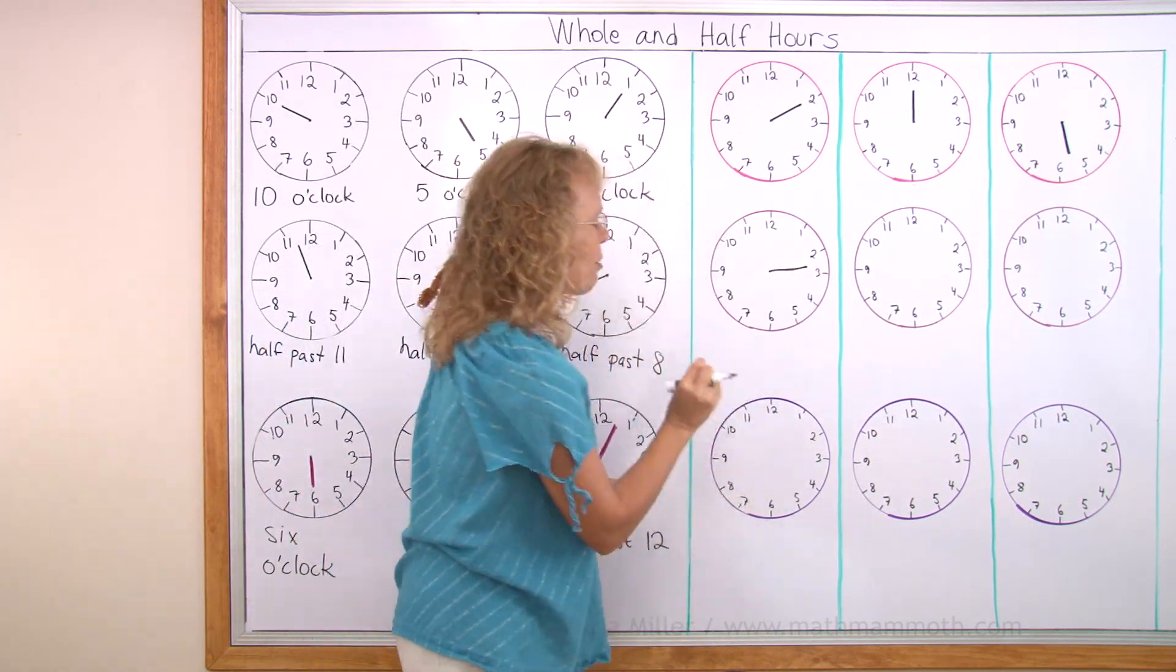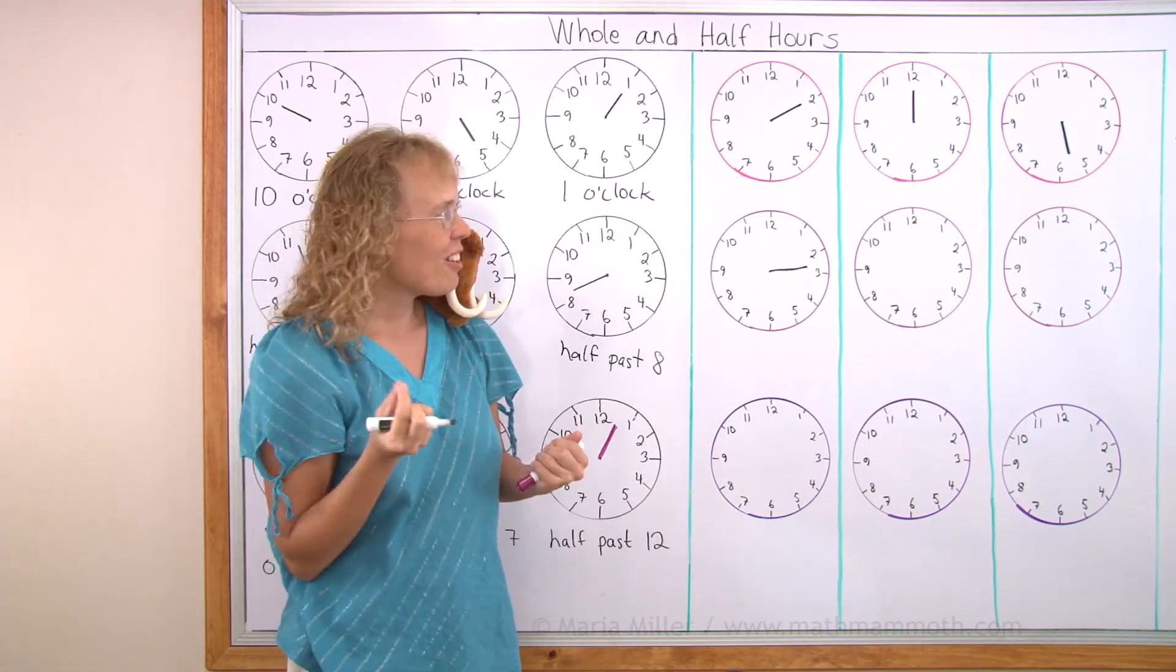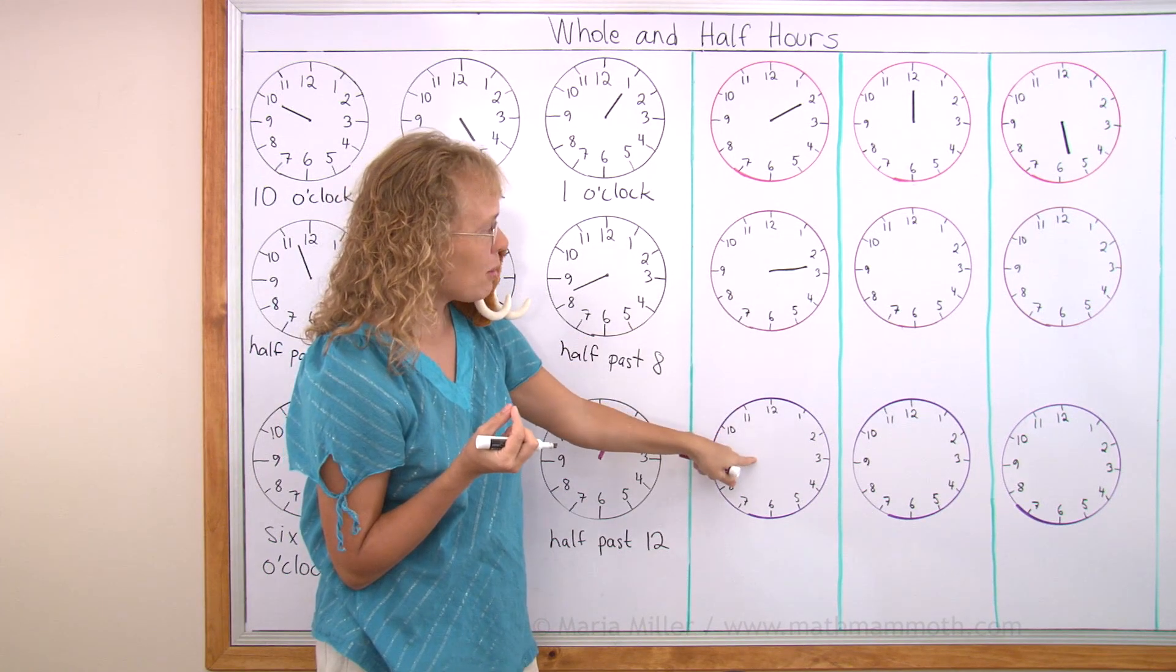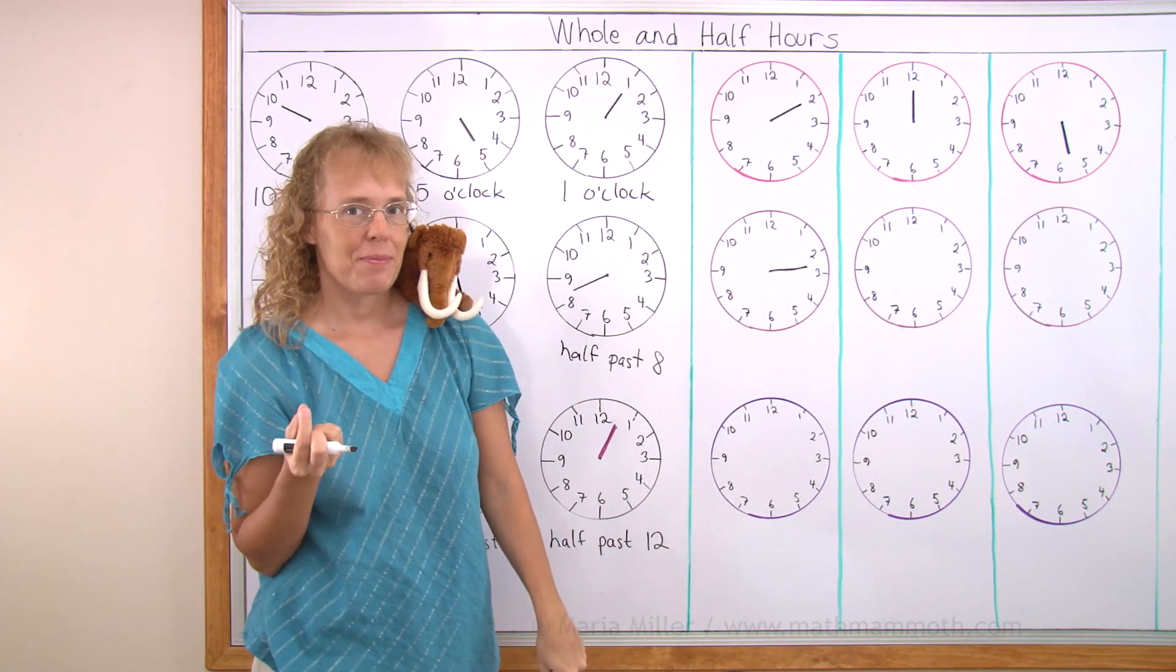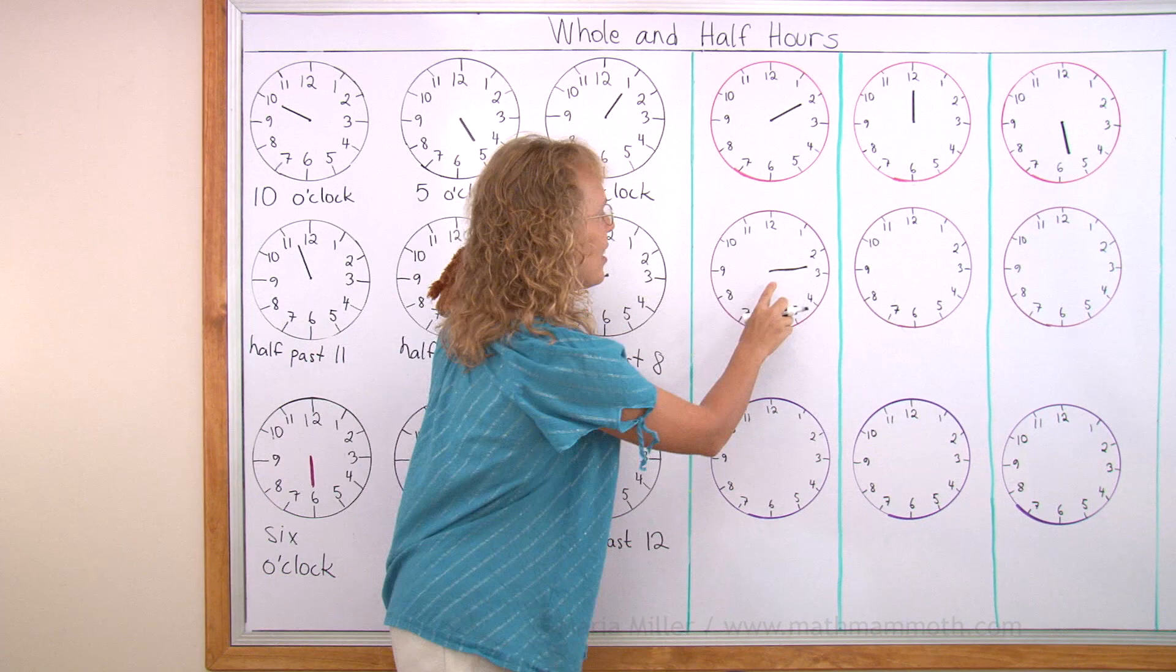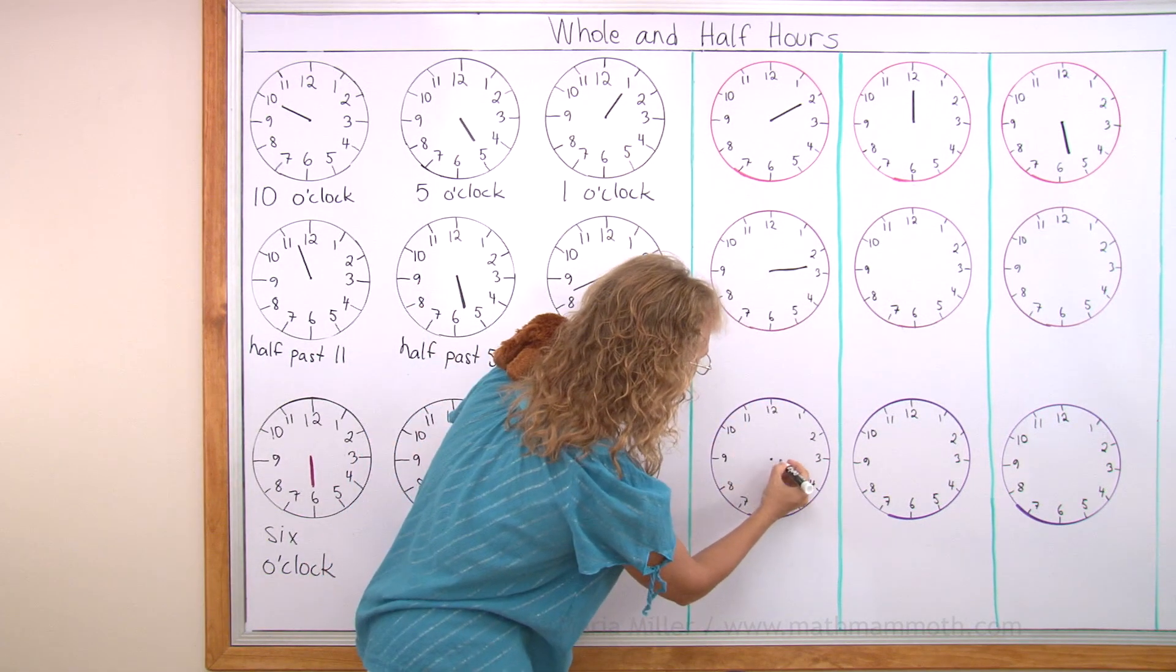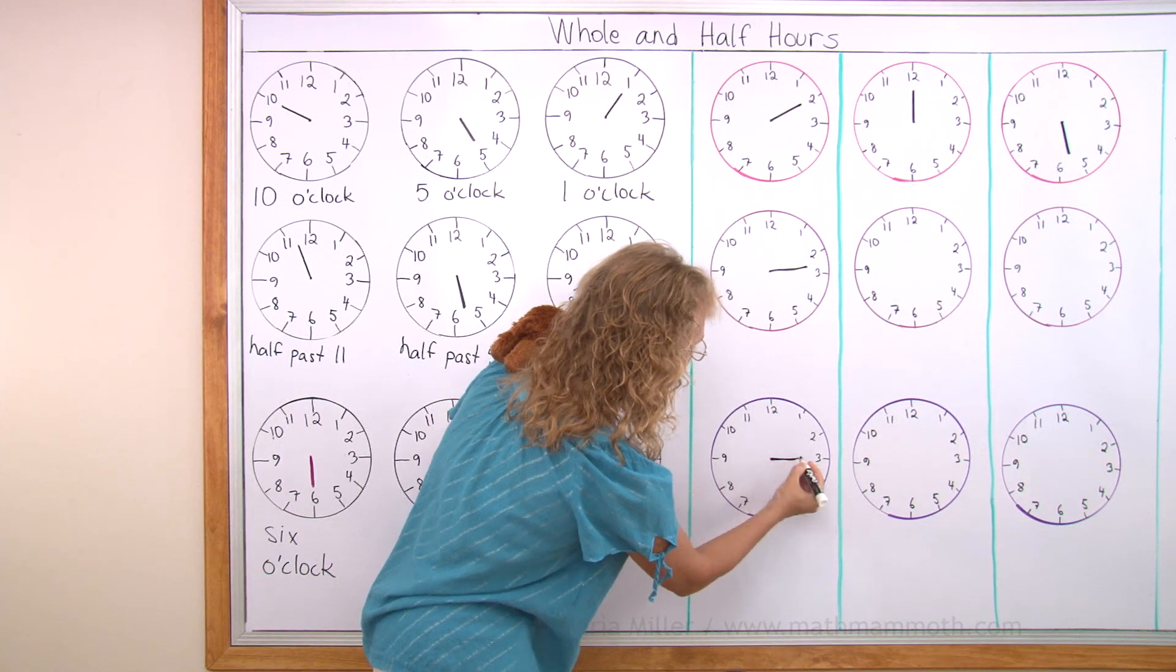Now to this clock we will draw the time half an hour after that time. Okay? Another half an hour passes. What time will it be? Okay? After half past 2. Another half an hour makes it exactly 3 o'clock. Right? Something like that.